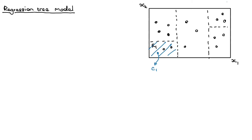This might be region two, and in that region we predict any point landing there gets C2. Similarly, this is region three with C3, region four with C4, and this might be region five.